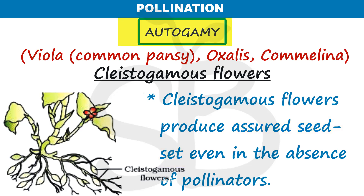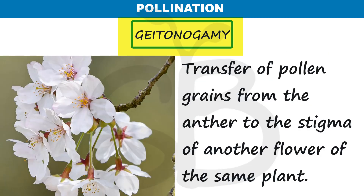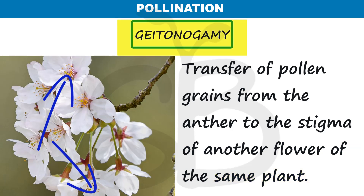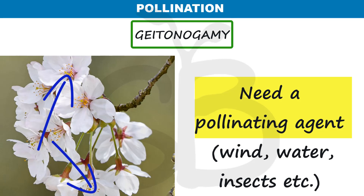Next, we will discuss geitonogamy — the transfer of pollen grains from the anther to the stigma of another flower of the same plant. For this, a pollinating agent is required, such as wind, water, or insects like butterflies.